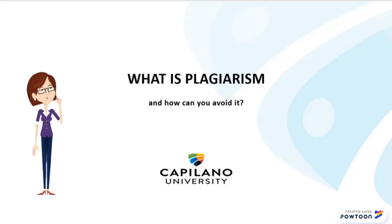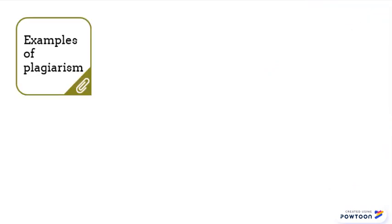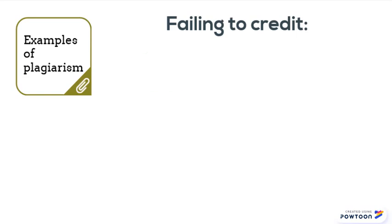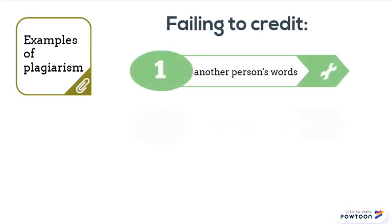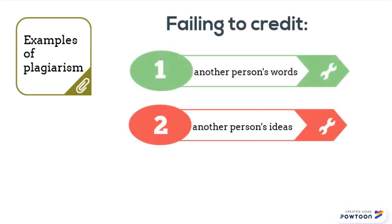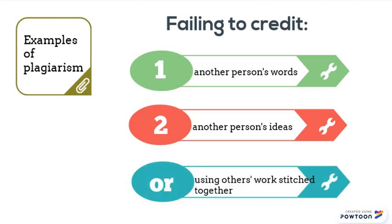What is plagiarism and how can you avoid it? Plagiarism is a type of academic misconduct that occurs when you fail to provide credit for another person's words or ideas. It's also unacceptable to submit work that consists of quotes and ideas stitched together from other people, with few or no insights of your own, even if you do cite all your sources.